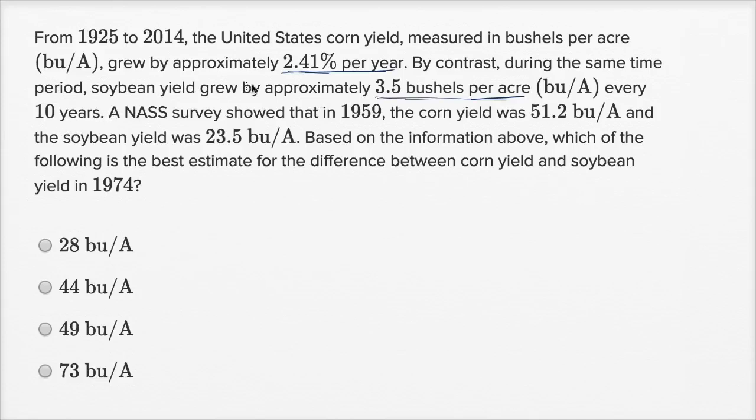Alright, so there's something interesting going on here. They've given us how much the corn yield grows in percentage terms, on a per year percentage terms, while for soybean yield, they tell us how much it grows in absolute terms, 3.5 bushels per acre every 10 years, or you could say on average 0.35 bushels per acre per year.